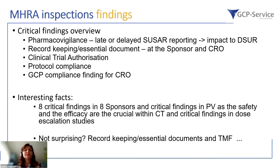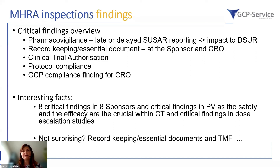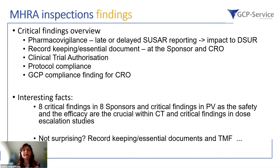There were also eight critical findings across eight sponsors related to product vigilance, safety and efficacy — which are crucial within a clinical trial — and specific study design issues such as dose escalation studies. Critical findings were also issued regarding the IVR system not being set up according to the protocol approved by MHRA and ethics committees. Record keeping, essential documents, and the trial master file were major issues, with many bullet points listed as reasons, because it was very hard to reconstruct the study conduct when there was such a significant lack of documents at the CRO side.